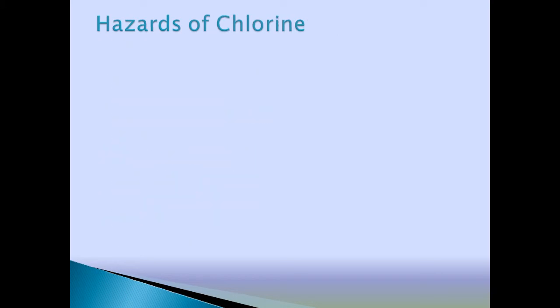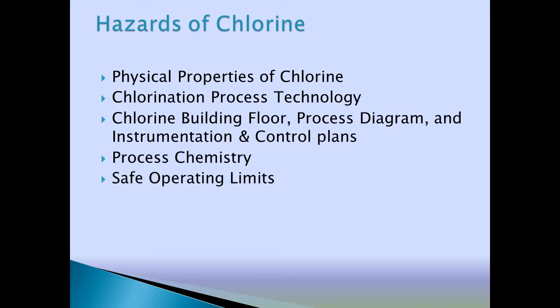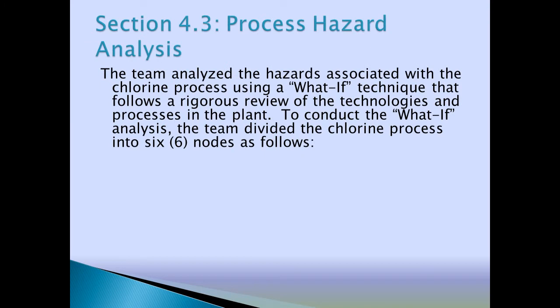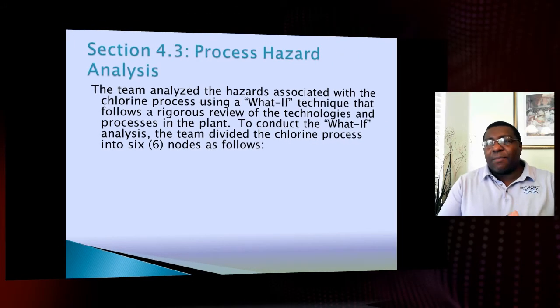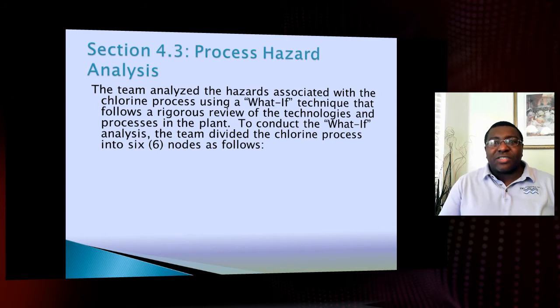Now, when you're dealing with your process, that's just a little bit of the hazards. We went over the chlorine hazards and then the properties of anhydrous ammonia. Going back to the Risk Management Plan, in Section 4 that's where you're talking about your Process Hazard Analysis. This is a what-if technique: What if this happens? What's going to be the effect to the process, to my employees, to the general public?